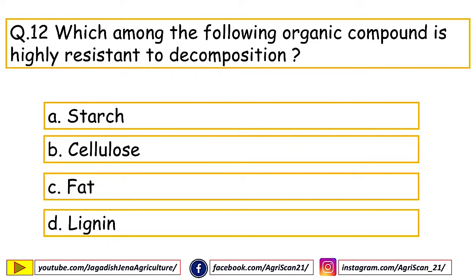Next question: which organic compound is highly resistant to decomposition? Options are starch, cellulose, fat, lignin. The right answer is lignin. Lignin is highly resistant to decomposition and is generally decomposed only by specific fungal species; bacteria and actinomycetes can hardly decompose it. The easiest to decompose is starch, followed by cellulose, then fat, and finally lignin, which is the least decomposable.